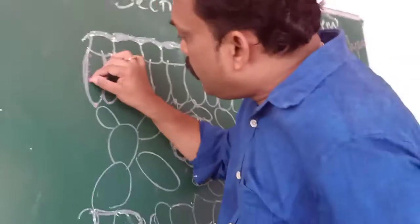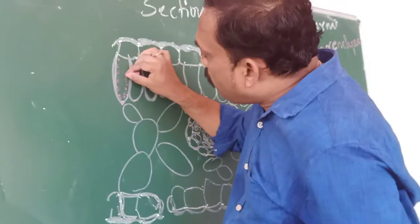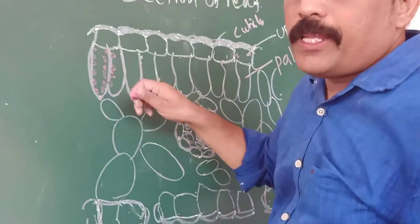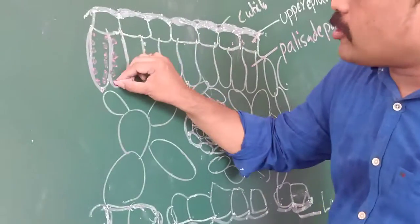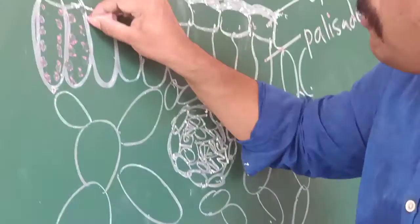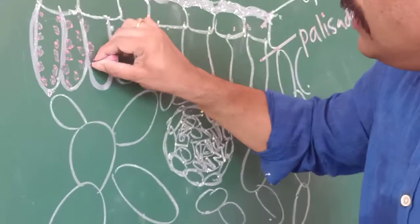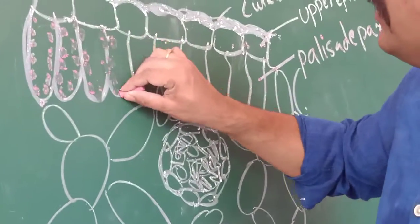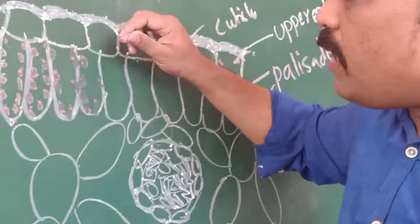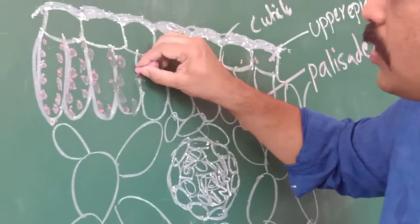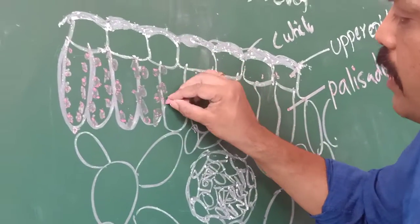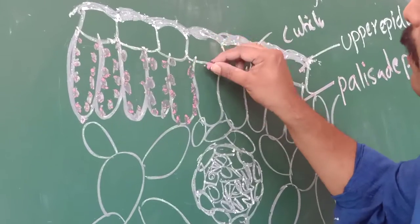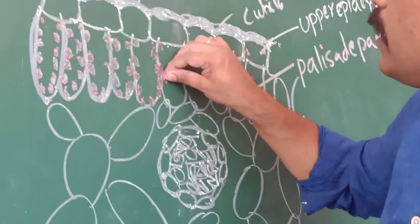In the palisade parenchyma, we observe some dot-like structures. Focus this — we observe a number of dot-like structures in the palisade parenchyma. Below the upper epidermis, we observe palisade parenchyma.